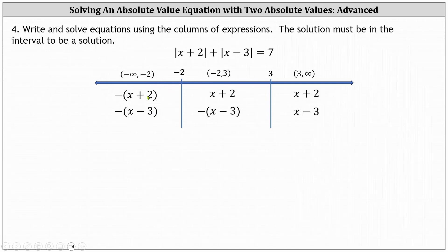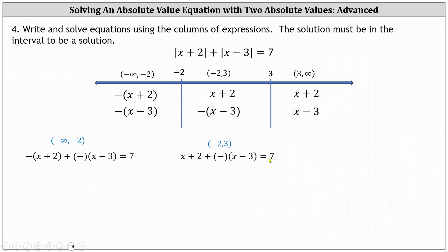Using the first column of the table, we sum the two expressions and set them equal to positive seven, the right side of the original equation. For the middle interval, we sum x plus two and the opposite of x minus three and set it equal to seven. Finally, in the third column, we sum the two expressions and set it equal to seven. We now solve these equations, and each solution must be in its given interval.